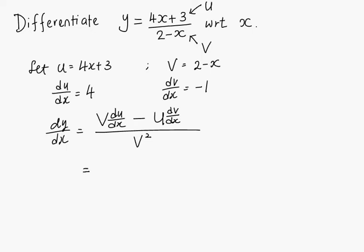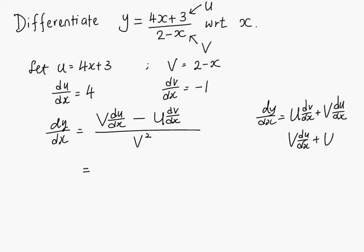It is very similar to the product rule. In the product rule, it's u dv/dx plus v du/dx. In the product rule, the order doesn't matter because it is addition. But in the quotient rule, the order is important — if you switch the order, the answer is totally different.